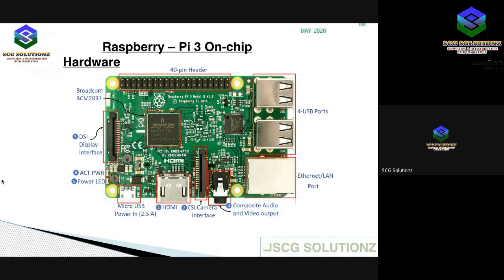CSI stands for Camera Serial Interface. There is also a DSI Display Interface — DSI stands for Display Serial Interface — used for connecting an LCD to the Raspberry Pi using a 15-pin ribbon cable. There is also a power LED, a red color LED for power indication that turns on when power is connected. There are 40 GPIO pin headers, which will be discussed later.